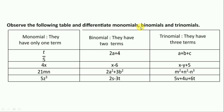Next, observe the following table and differentiate monomial, binomial, and trinomial. An algebraic term which has only one term is called a monomial. If it has two terms it is a binomial, and for three terms it is a trinomial. See here: 4x, t divided by pi — if there is division or multiplication, then it is only one term. So all these algebraic expressions have one term.